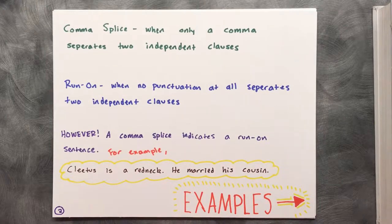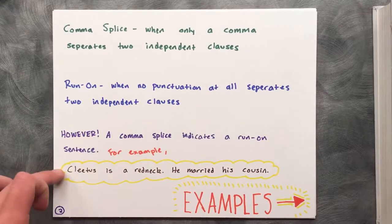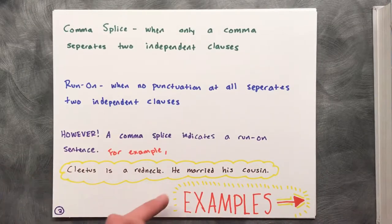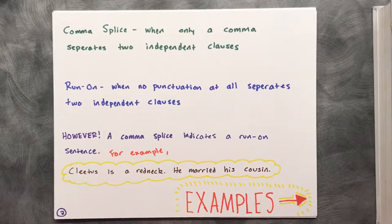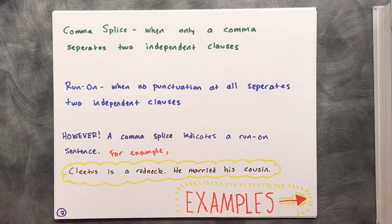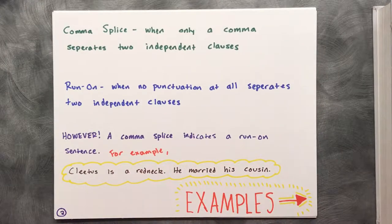For example, take these two simple sentences: 'Cletus is a redneck. He married his cousin.' Both of these statements pass the independent sentence test — each one contains a subject and a verb, and each one also expresses a complete thought.